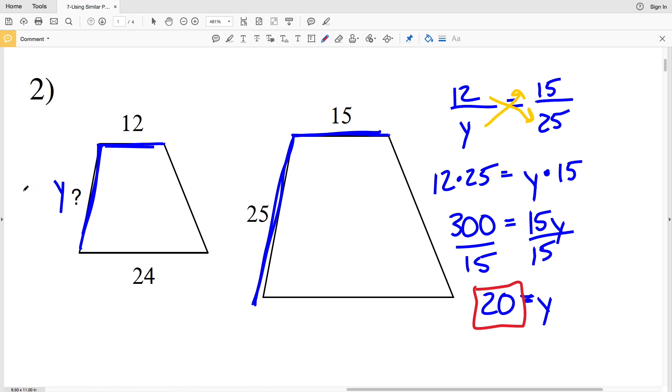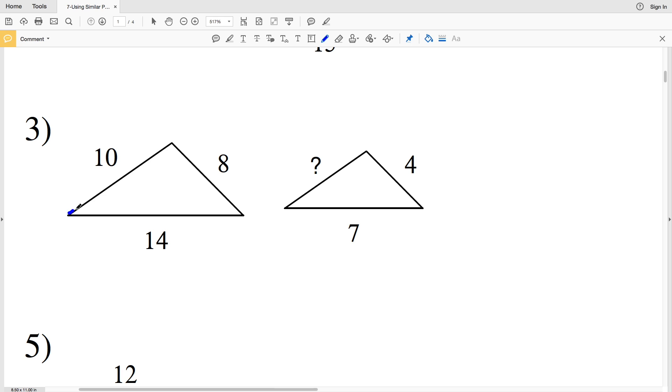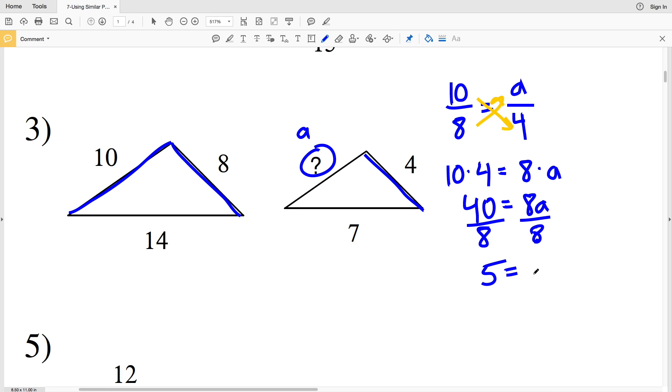In number three, 10 corresponds with the missing side length and 8 corresponds with 4. So I'll do 10 over 8 equal to our missing side length—let's call this a—over 4. Cross multiplying, 10 times 4 equals 8 times a. 40 equals 8a, since 10 times 4 is 40. And when I divide by 8, I get that 5 is equal to a, so the missing side length in number 3 is 5.